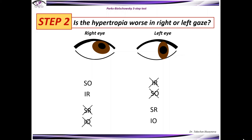Step 2: Define if the hypertropia is worse in right or left gaze. As we can see here, the hypertropia is worse in left gaze, and this will exclude the inferior rectus of the right eye as well as the inferior oblique of the left eye. So we have now reduced the number of possible underacting muscles from 4 to 2.